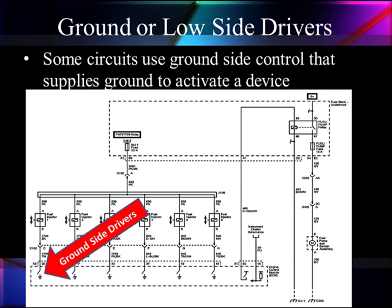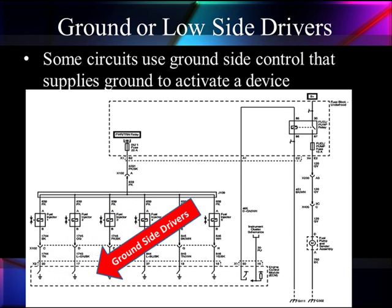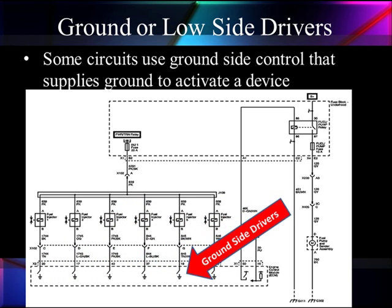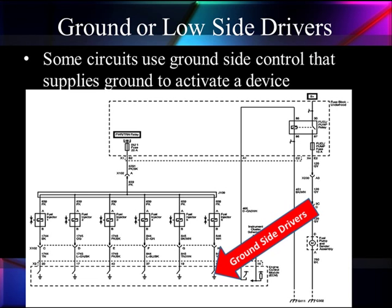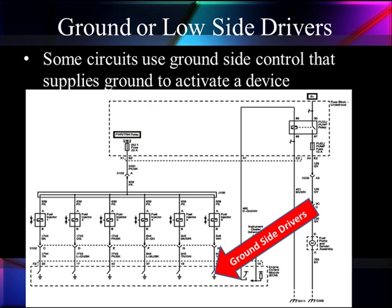Let's look at real schematics. We're looking at a diagram where the PCM or ECM is on the bottom — it's got all of these FET switches on the ground side. These are all injectors; they're wired into a fuse up there to power them up, so they all have power on the top. The computer control system is going to supply ground to turn them on.